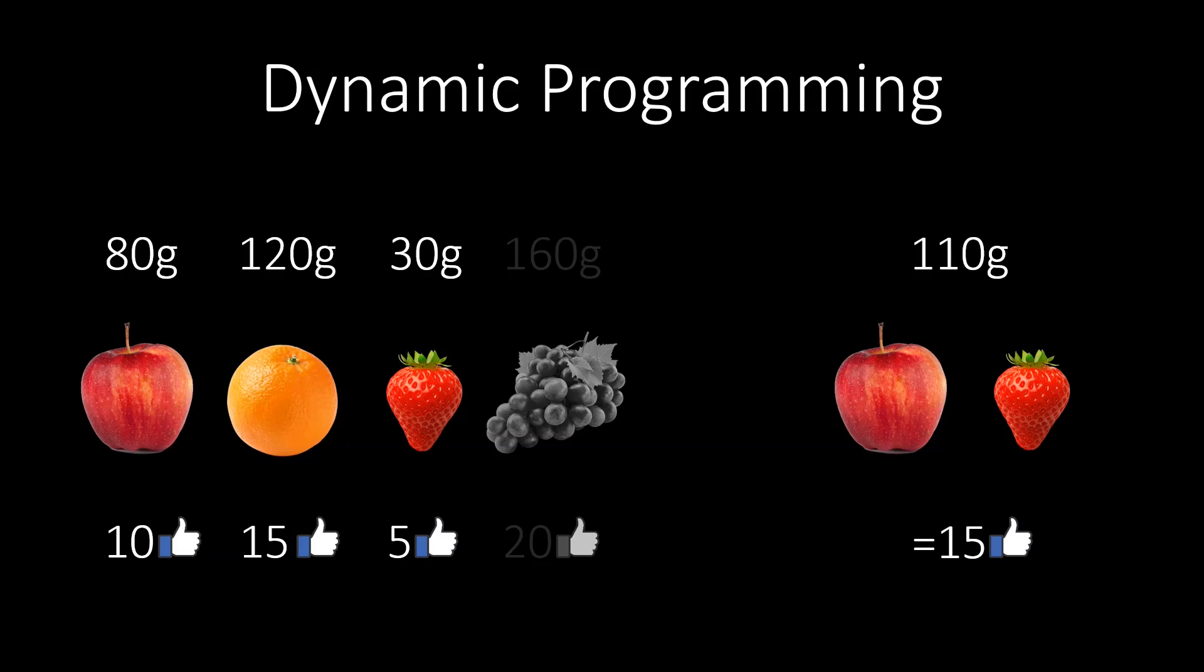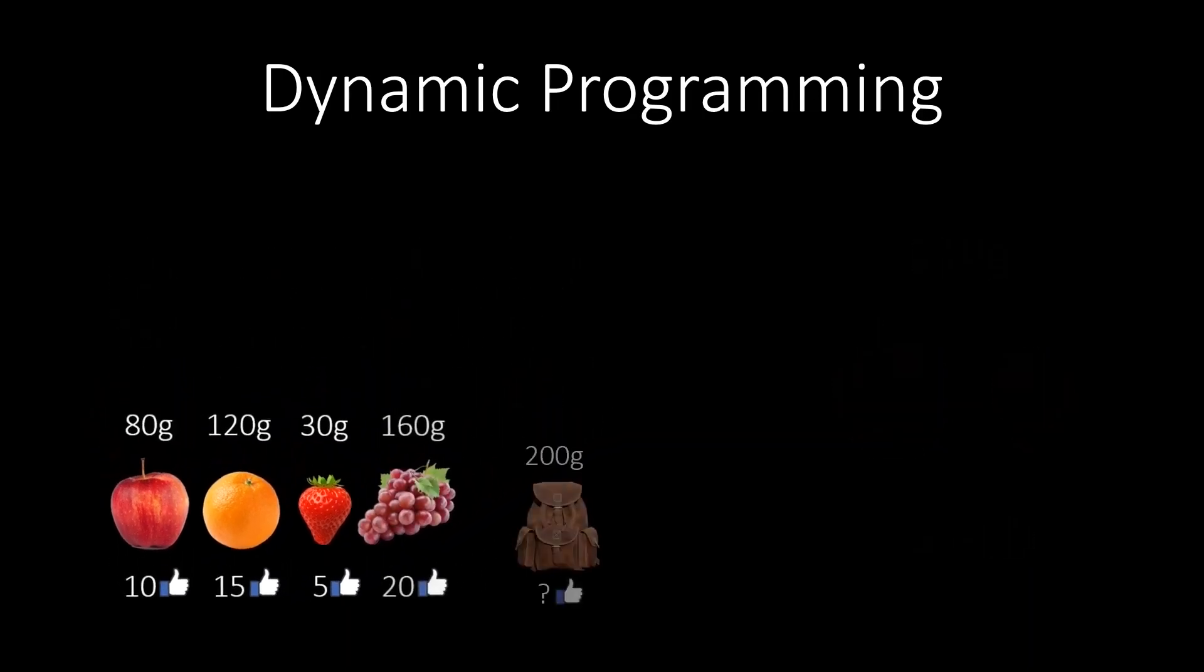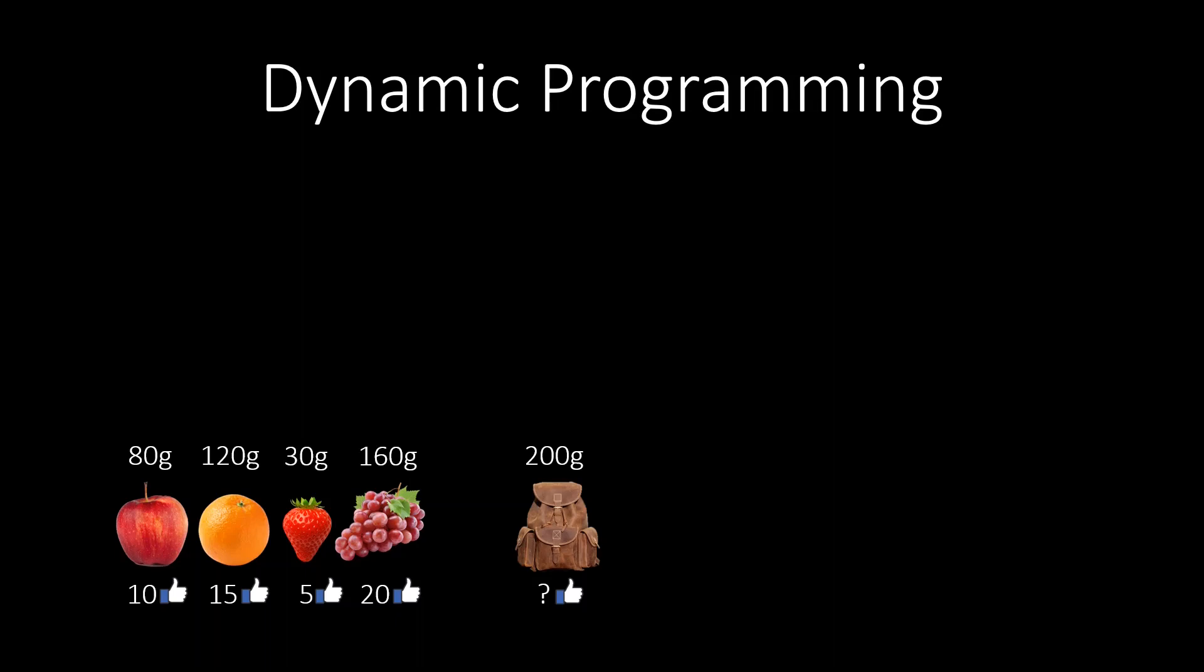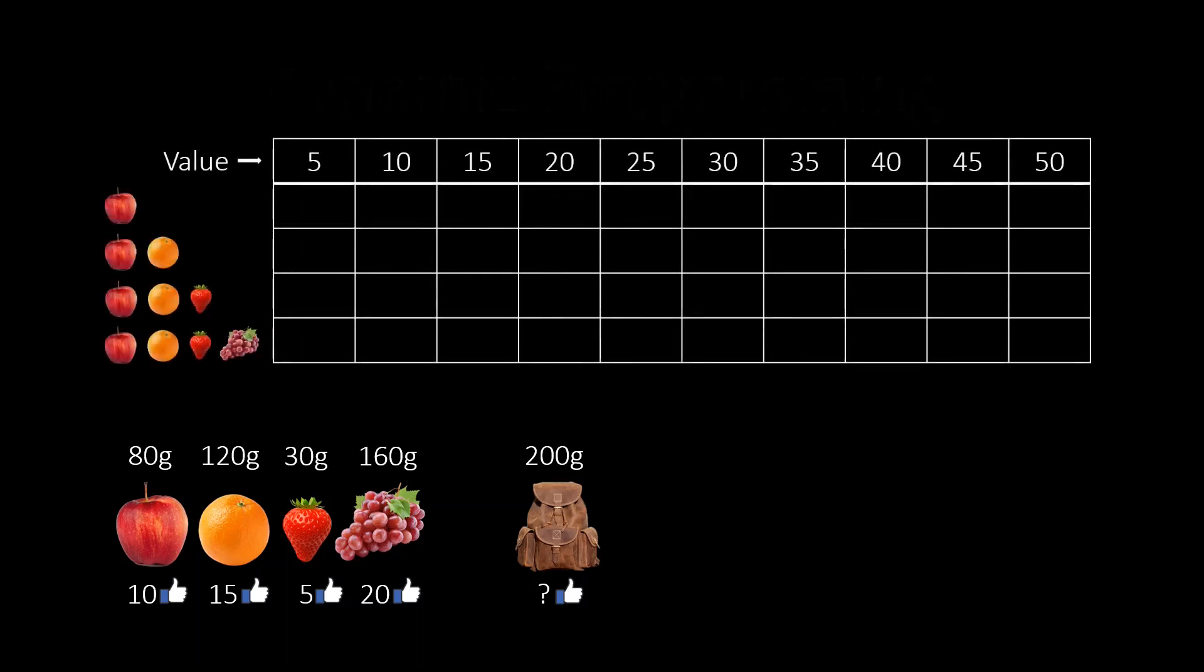For dynamic programming, we solve all sub-problems of this kind for all relevant parameters. The results can be put into a table. Here the entry in row I and column J, contains the result of the following sub-problem: what is the minimum weight of a subset of the first I items with a total value of exactly J.